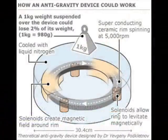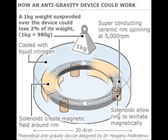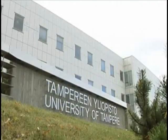In 1992, Dr. Eugene Podkletnov discovered an anomalous gravitational effect while working at a superconductor research laboratory at the University of Tampere in Finland.